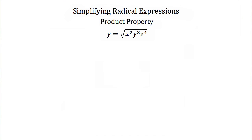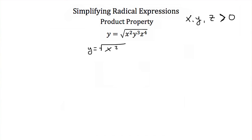Now the product property works for variables as well. Here we have y is equal to the square root of x squared times y cubed times z to the 4th. We don't want to take the square root of any negative numbers, so before simplifying I'm going to say that x, y, and z are all greater than 0. Using the product property, we break this up into the square root of x squared times the square root of y cubed times the square root of z to the 4th. The square root of x squared gives us x, since x is positive.